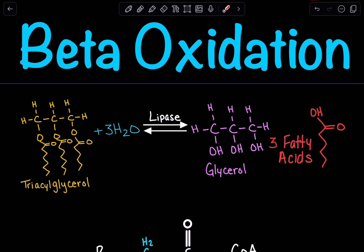We could have two fatty acids and a phosphate head group, or just one fatty acid. Fatty acids can be of varying lengths, with a different number of hydrogens and carbons. They could be saturated or unsaturated, trans or cis. Here we're just showing a general structure of what a lipid could look like to understand beta-oxidation.